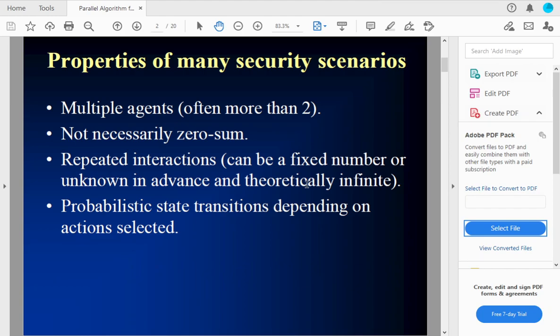So a lot of national security scenarios have the following properties. Often there are more than two agents, which may be countries or patrollers. But often there's more than two. They're not necessarily zero-sum. There can be some situations where all players lose or all players win or some combinations somewhere in between. There can be repeated interactions for either a fixed number or some number that's unknown in advance and theoretically could be infinite. And often there are probabilistic state transitions where they take actions and then there's uncertainty over the next state.